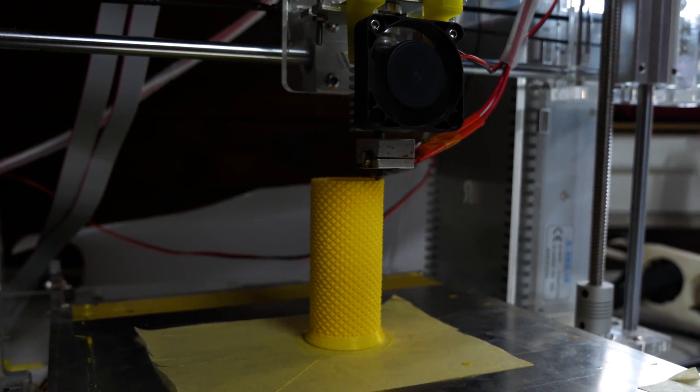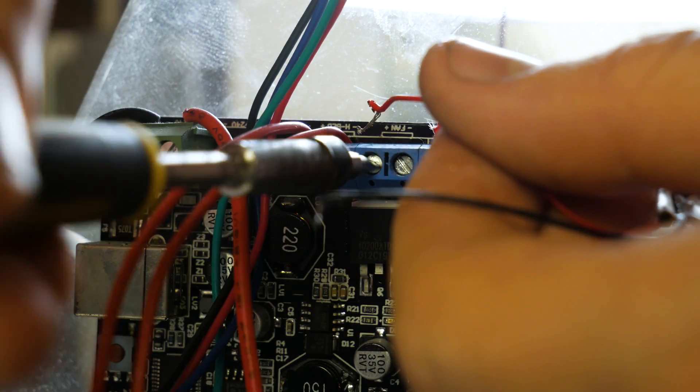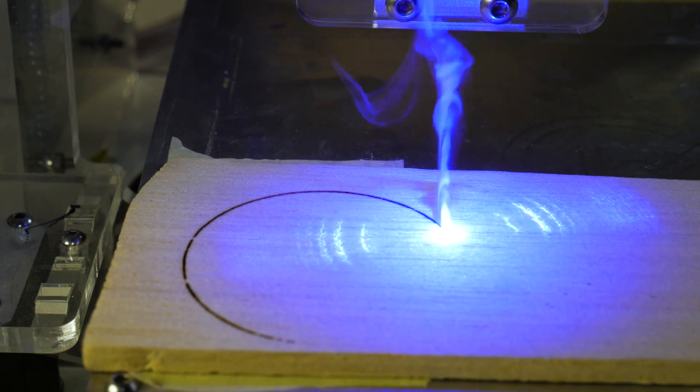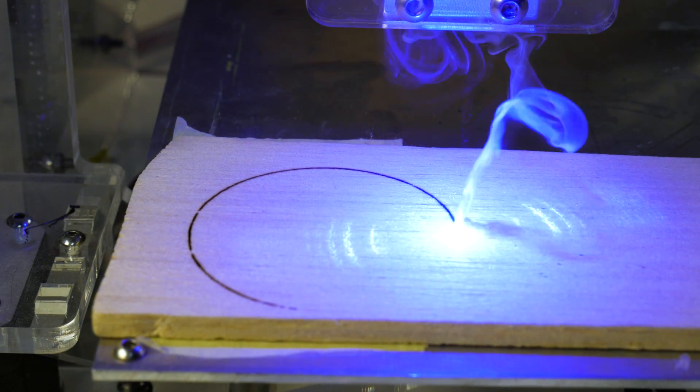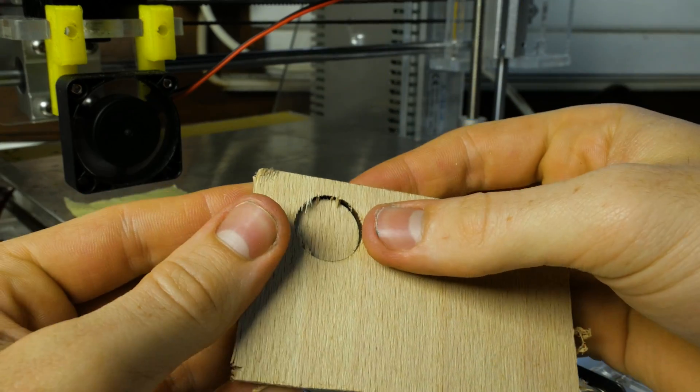What's up guys, in this tutorial I'm gonna show you how to convert any 3D printer into a powerful 2.5 watt laser engraver capable of cutting wood and engraving into almost every material.